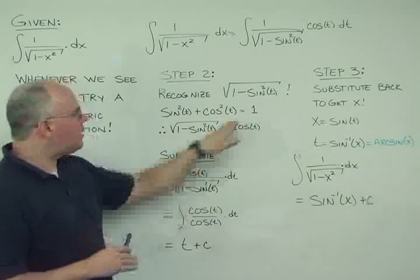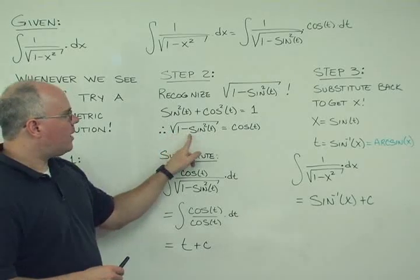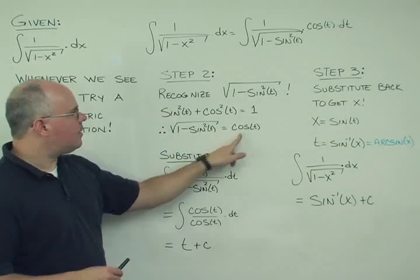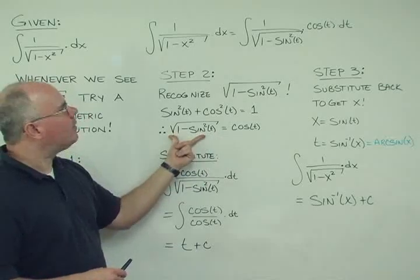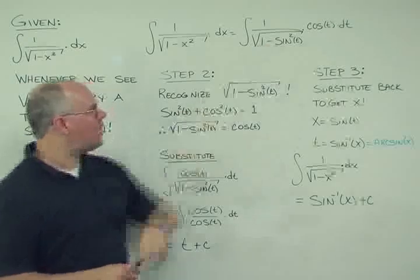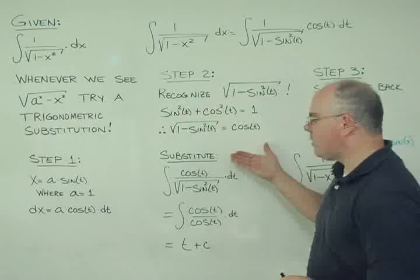And so when we see this, we can rearrange the terms. Therefore, the square root of 1 minus sine squared is equal to the cosine. So we can take this entire radical and replace it with just cosine in this case. So we're going to perform that substitution, and here we have the substitution.